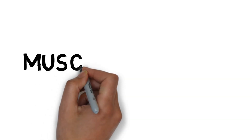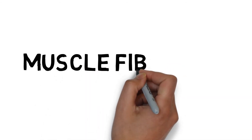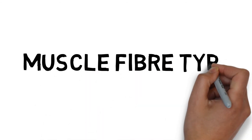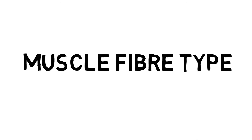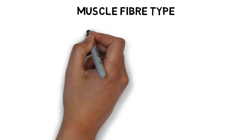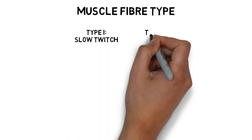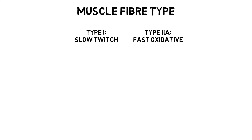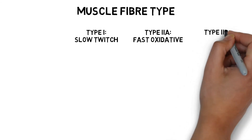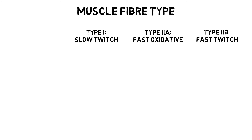Not all muscles are made up in the same way. We have three different types of muscle fibre, and this is genetically determined, although between 10 and 20 percent of our fibres can be adapted through training. The three fibre types are: Type 1 or slow twitch, Type 2a or fast oxidative, and Type 2b or fast twitch.